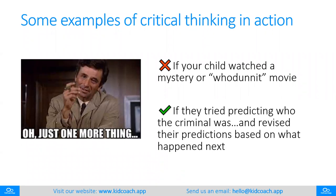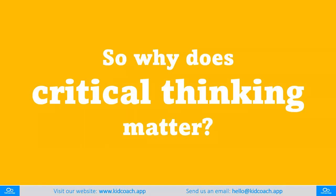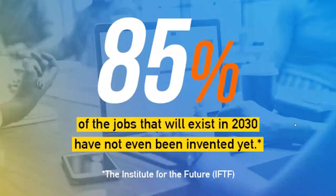These are examples from everyday life. We can be watching a movie together and there's an opportunity for developing critical thinking. So why does it really matter? I want to share this quick statistic: 85% of the jobs that will exist in 2030 have not even been invented yet. Just dwell on that for a moment — the vast majority of the jobs that our kids will end up doing have not even been invented yet. That's because the world is changing so fast.